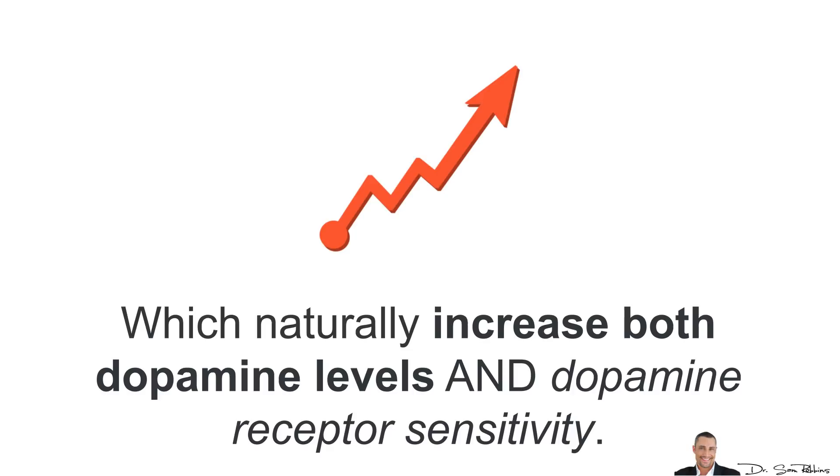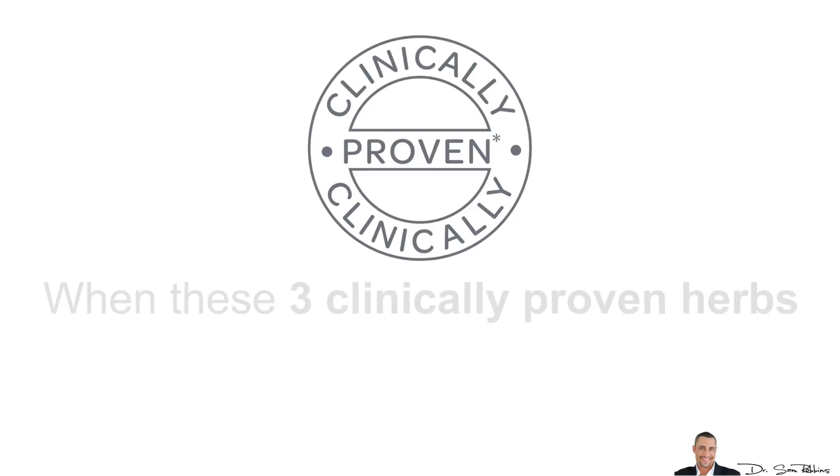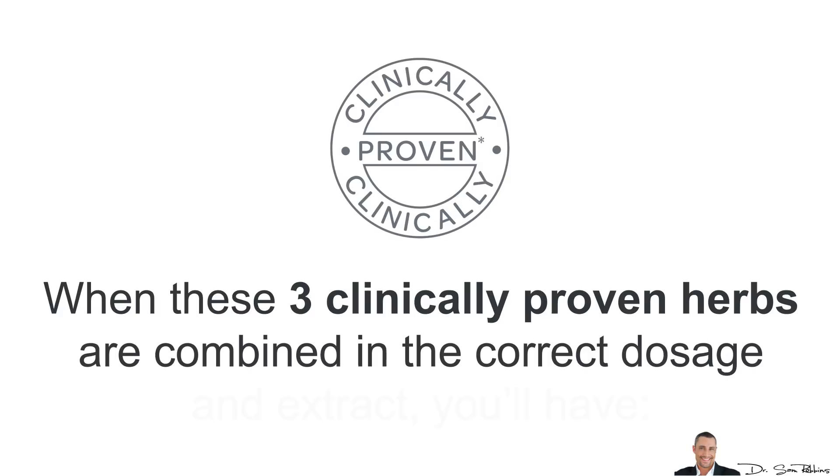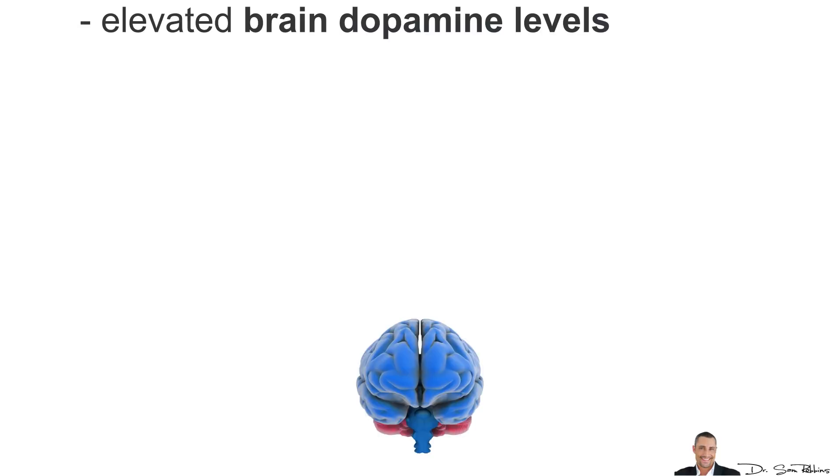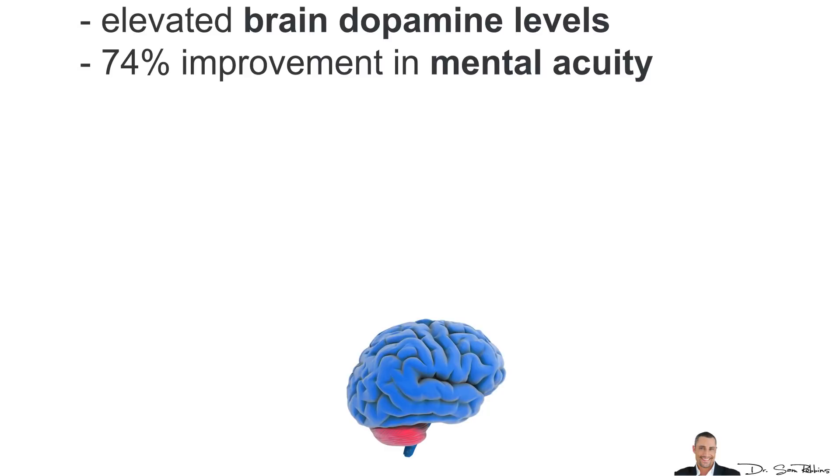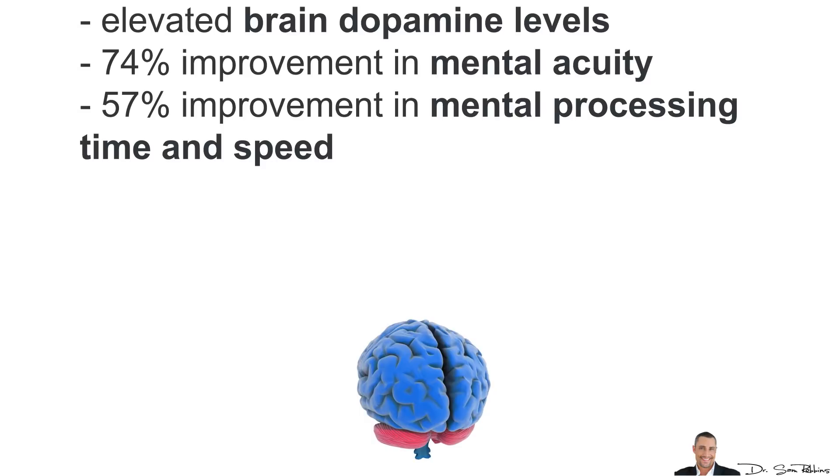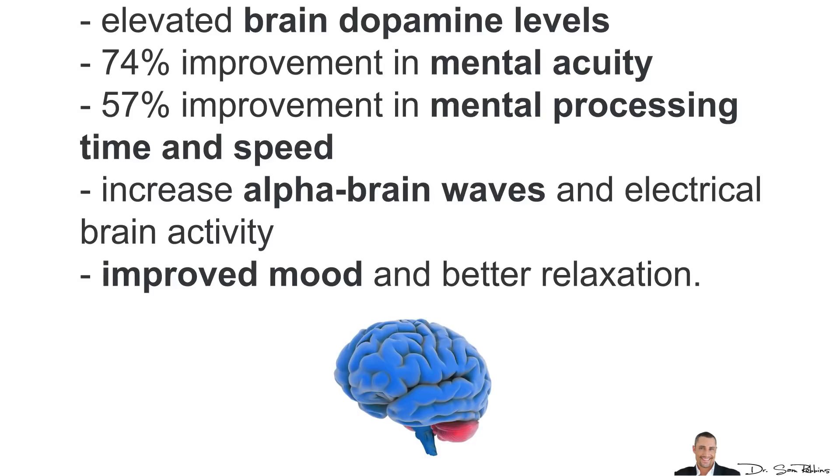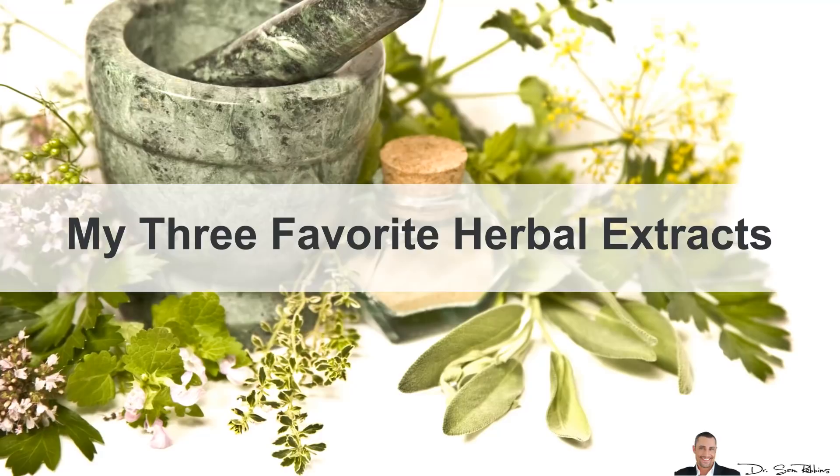and dopamine receptor sensitivity. When these three clinically proven herbs are combined in the correct dosage and extract, you'll have elevated brain dopamine levels, 74% improvement in mental acuity, 54% improvement in mental processing time and speed, increase in alpha waves and electrical brain activity, and improved mood and better relaxation.